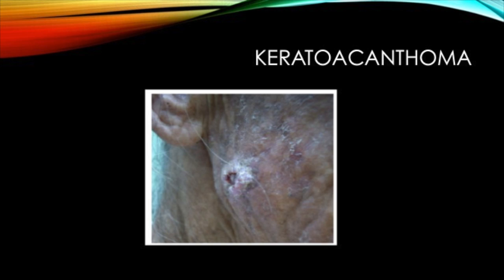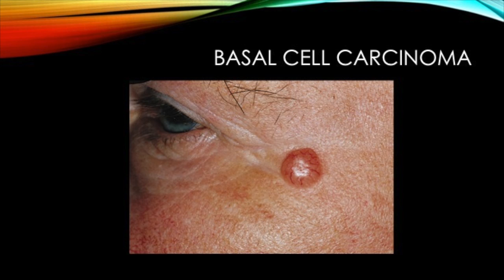Another extraoral lesion is keratoacanthoma, a keratinous nodule with a central depression. Sometimes the depression ulcerates and crusts, as shown in this picture. The last extraoral lesion we will discuss is basal cell carcinoma, most commonly found on the upper lip and the nose. It has a red appearance with pronounced blood vessels on the lesion. Basal cell carcinoma usually develops on areas frequently exposed to the sun, especially the face, head, and neck, but can occur anywhere on the body. One of the best ways to prevent this is to apply sunscreen daily, especially when spending long hours in the sun.